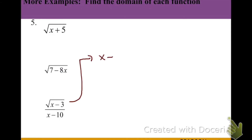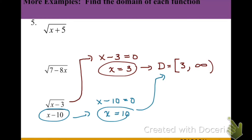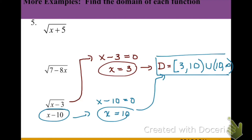This last example has both a square root in the numerator and a denominator. We take care of the radical first by setting x minus 3 equal to zero, giving us a value of 3. So for the numerator, the domain is from bracket 3 to infinity. Taking into account the denominator and setting it equal to zero gives us a positive 10. Since 10 falls in the range 3 to infinity but we can't be 10, we split using interval notation: from 3 to 10, skip over 10, and continue to infinity, using union signs to join the two intervals.